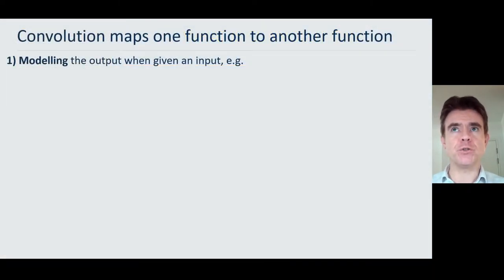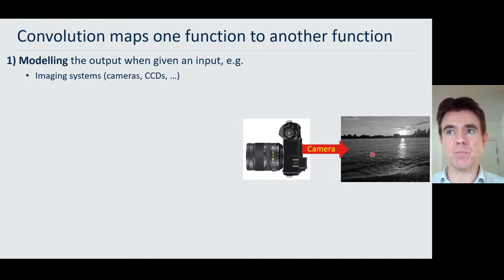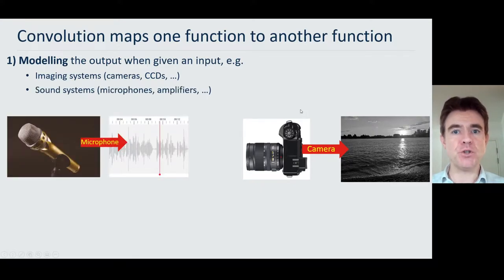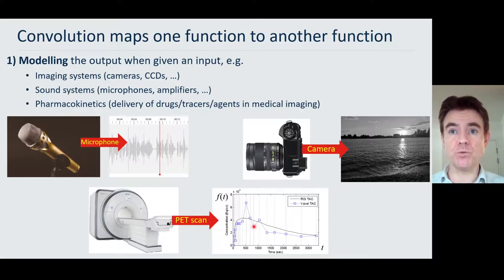Convolution maps one function to another function. This can be used to model the output of a measurement device when given some input signal. For example, a camera imaging some scene to give a photograph can be well modeled by convolution. It can also model how we record sound — the quality of a microphone or amplifier output — and even diverse applications like medical imaging. In a PET scan, we could model using convolution the uptake of a tracer inside the patient's body.